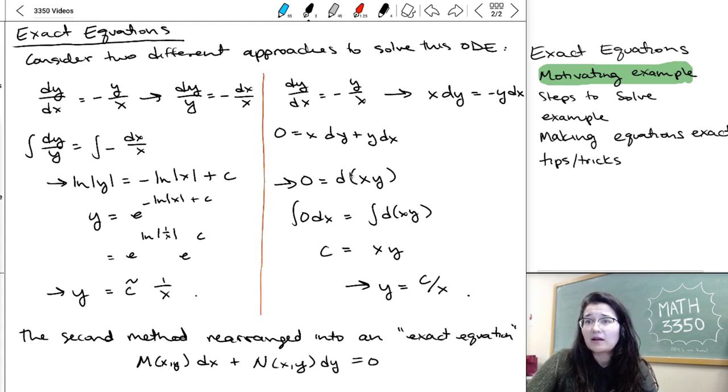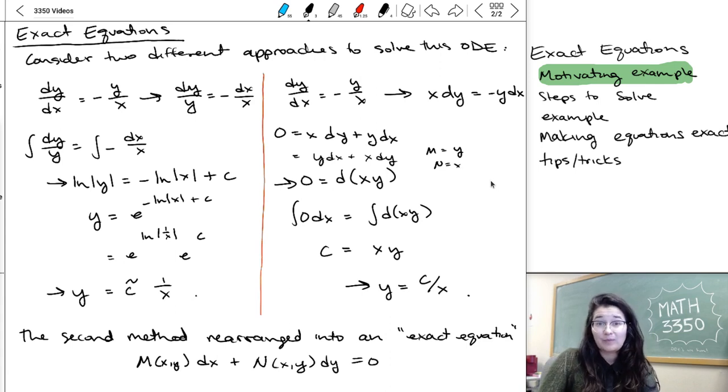So in the example we did right here, it was kind of backwards. So my m was y dx plus my n is x dy. So m equals y, n equals x. Would be how you see that in the exact equation form.